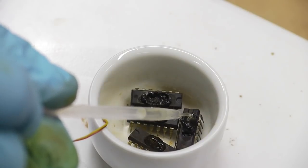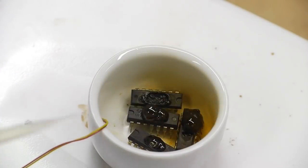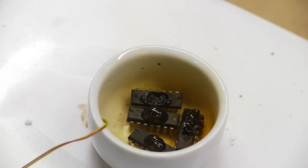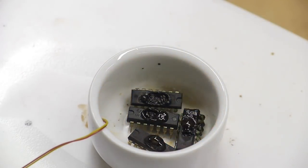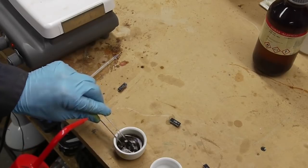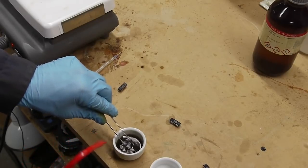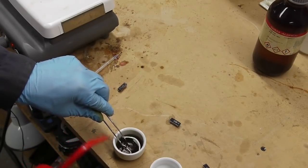If the acid touches the DIP leads, it fumes vigorously and is obviously dissolving away the metal, which you don't really want. So periodically I would take the chips out of the hot plate container and rinse them in some acetone.